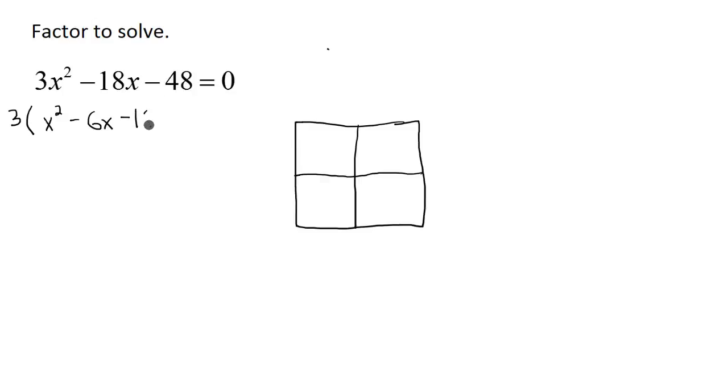And then -48 divided by 3 is going to be just -16. That will all still equal 0. Now I could get into my box method. So what I'm going to do first is put my ax² term in this top left hand corner, and that ax² term is going to be just an x².